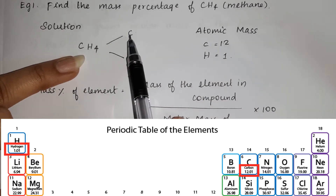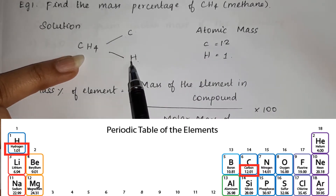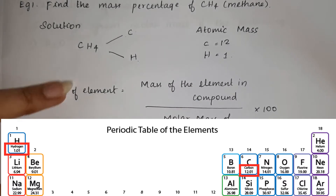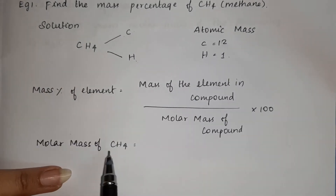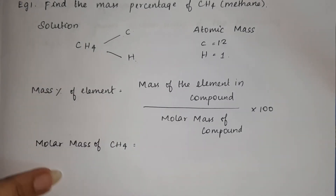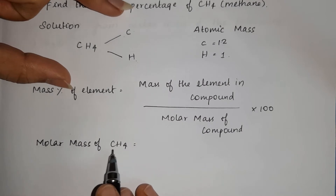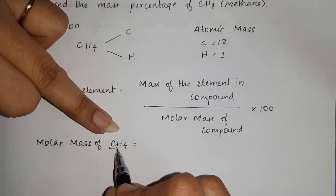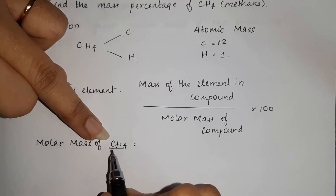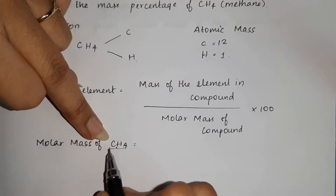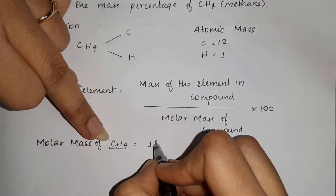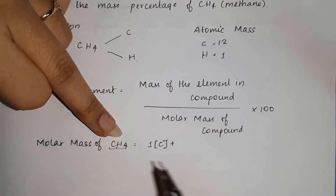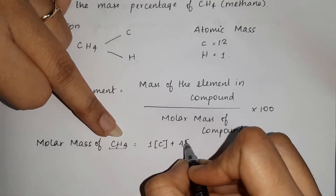Carbon atomic mass is 12 and hydrogen atomic mass is 1. Now let's take CH4 molar mass. First, carbon atom is 1 atom: 1 into C. Hydrogen atom is 4: 4 into H.